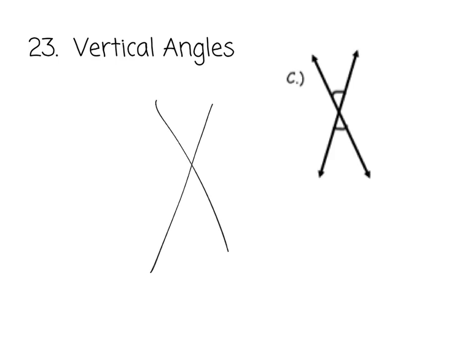Next term is vertical angles. Vertical angles happen when two lines intersect. So we have two lines that intersect and they are the non-adjacent angles. Some people think about them as opposites, but they're the non-adjacent angles. So this red one, that is a set of vertical angles. The blue angles here, that's another set of vertical angles.